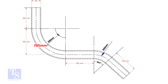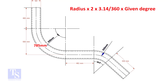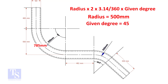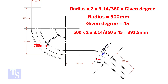Let us calculate the length of the 45 degree segment. For the 45 degree segment, the required length of the pipe is 392.5 mm.